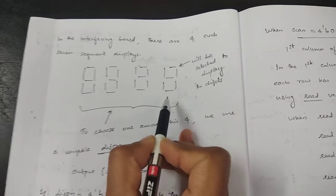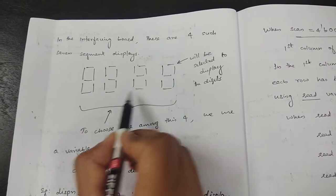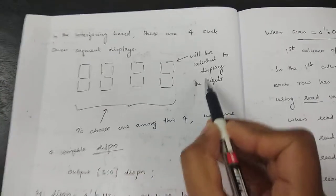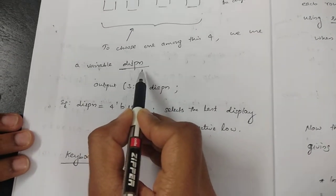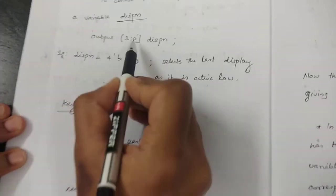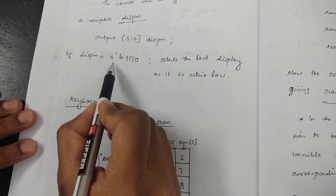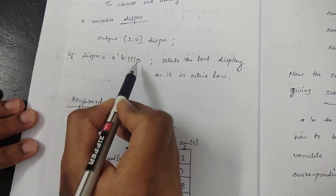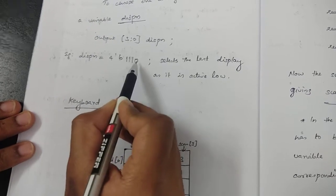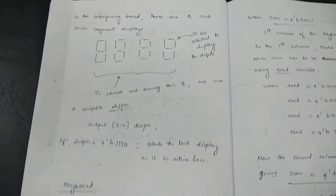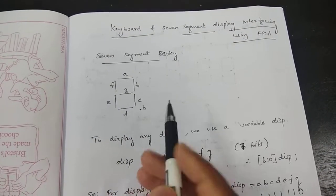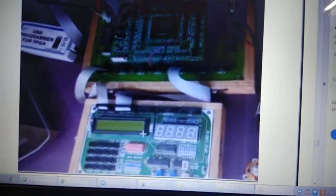In our interfacing board we have four seven segment displays, so we need to select any one of the four. Selection is based on active low logic, so we use another variable called 'dsp_n', declared as 'dsp_n [3:0]'. If you assign the value 4'b1110, the last segment is activated and selected.